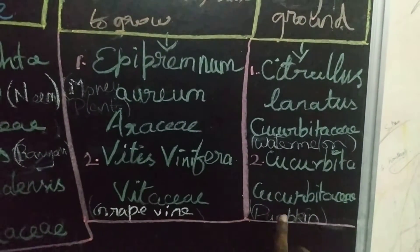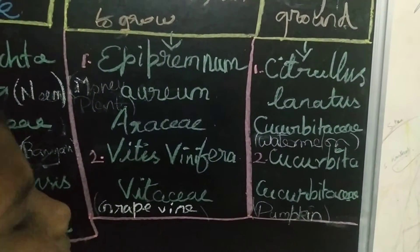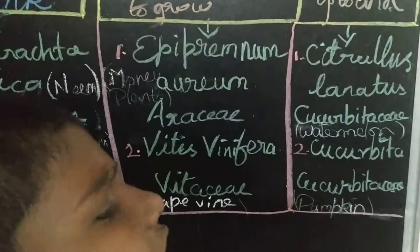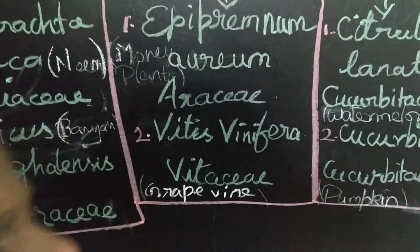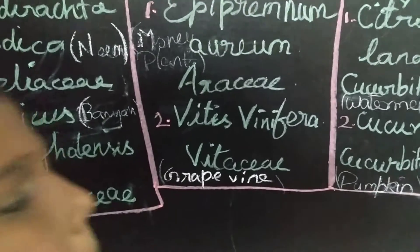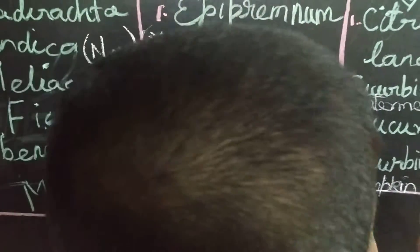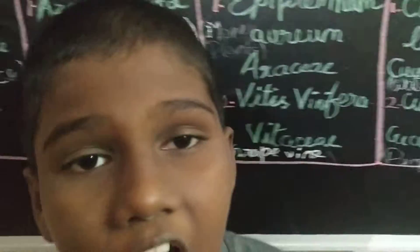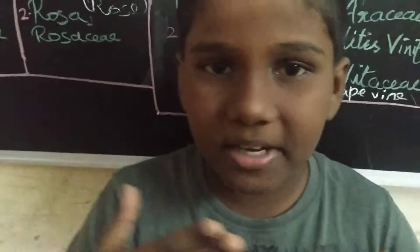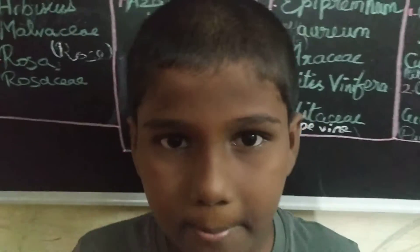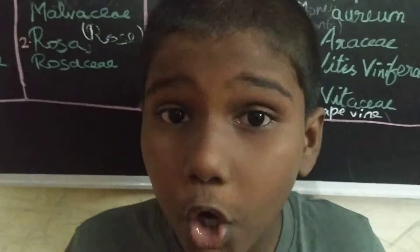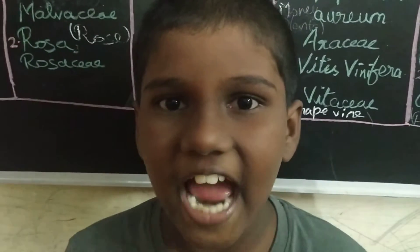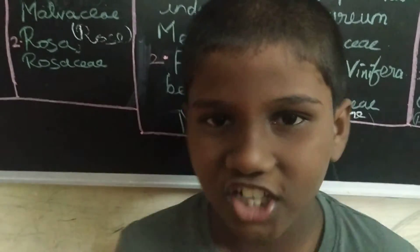The pumpkin binomial name is Cucurbita and the family is Cucurbitaceae. If you like my video, please subscribe to my channel. Thank you all.